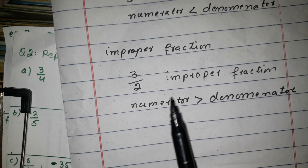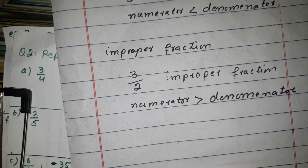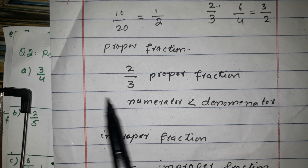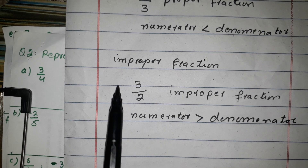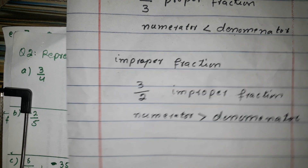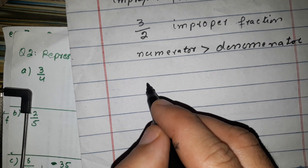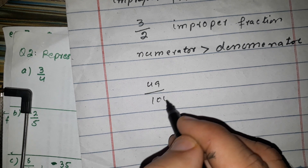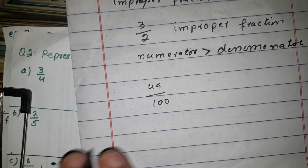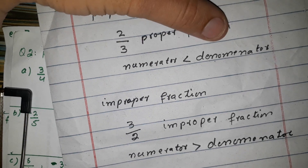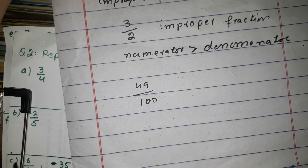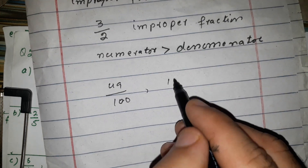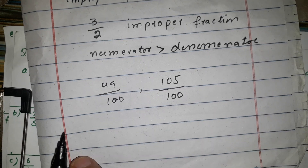Numbers on the board: 3, 2, 2, 2, 3, 3, 2, 3, 2, 4, 4, 5, 5, 5, 6, 6, 6, 7, 5.